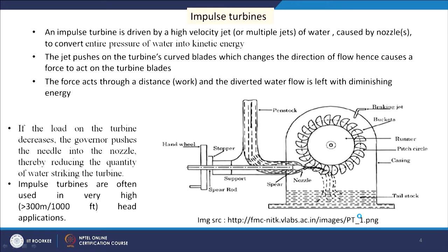Now we will look at impulse turbines. Water enters through the penstock and through a nozzle into the turbine casing. A governor can place a needle in the nozzle, so depending on the needle position the flow of water can change. The main feature of an impulse turbine is that it is driven by a high-velocity jet — or multiple jets — of water caused by nozzles. The nozzle converts the entire pressure of water into kinetic energy.